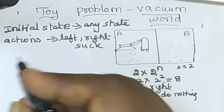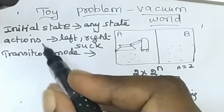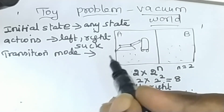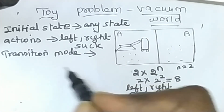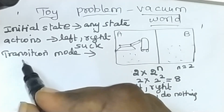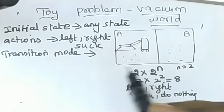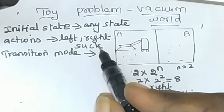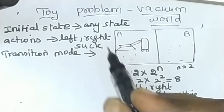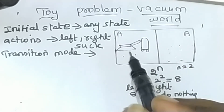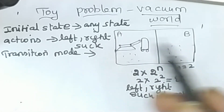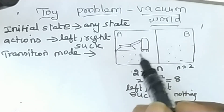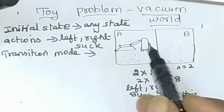The next component is the transition model. Once an action is performed, the state is changed from one state to another. For example, if a location has dirt and the vacuum cleaner performs the suck action, the state changes and A square is declared as a clean square. That change of state after an action is called the transition model.